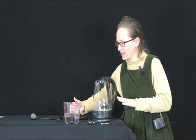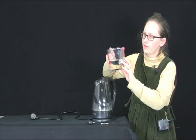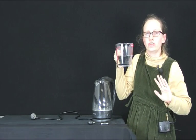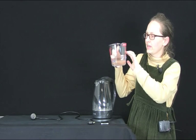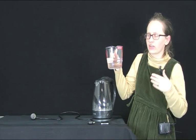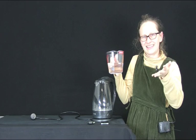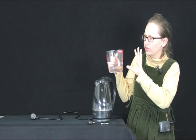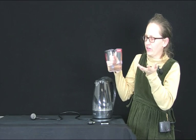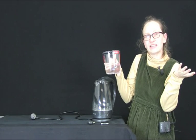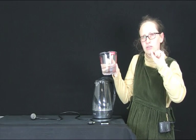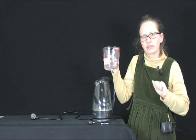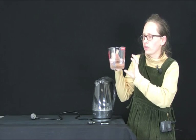So how you calculate the uncertainty in the volume is estimate how accurately can you measure the volume using your measuring cylinder. In this case, the measuring cylinder only has markings every 50 millilitres. So I would find it hard to measure the level of water in here more accurately than, say, around about 25 millilitres. We usually do about half the smallest increment.